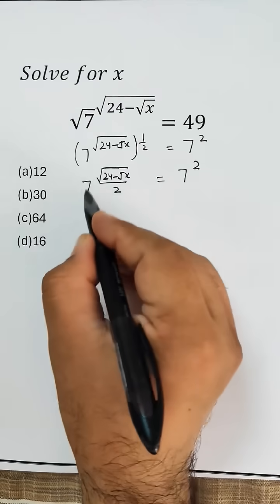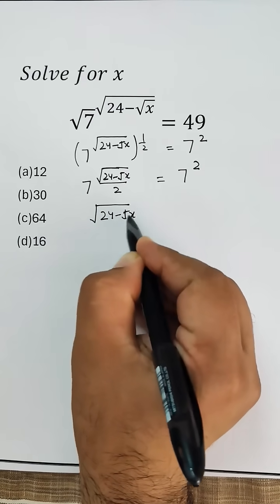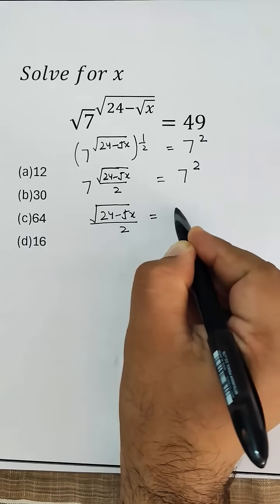Now as the base is the same, the exponents will be the same. That means square root of 24 minus root x over 2 equals 2.